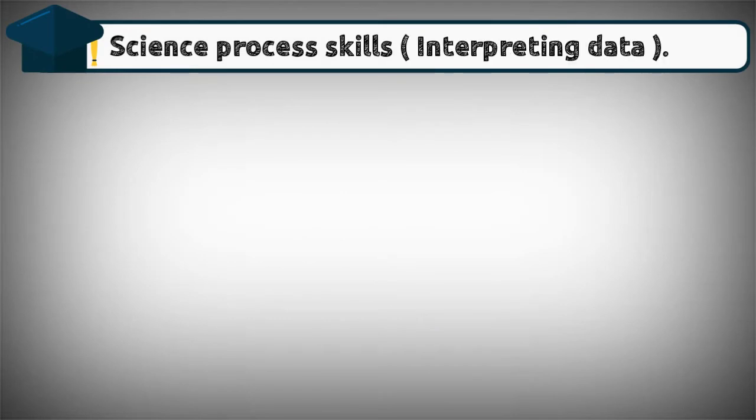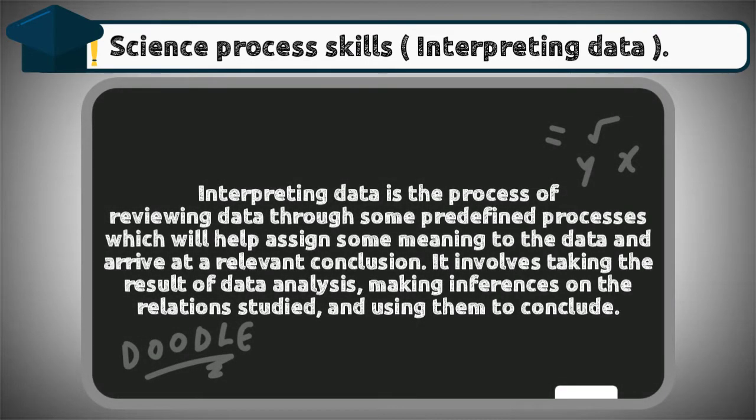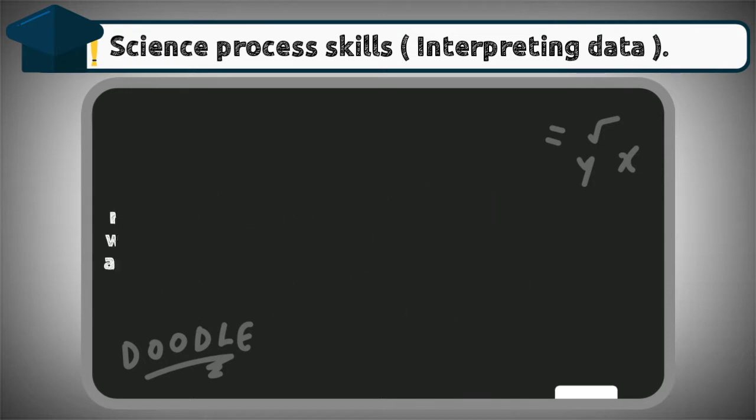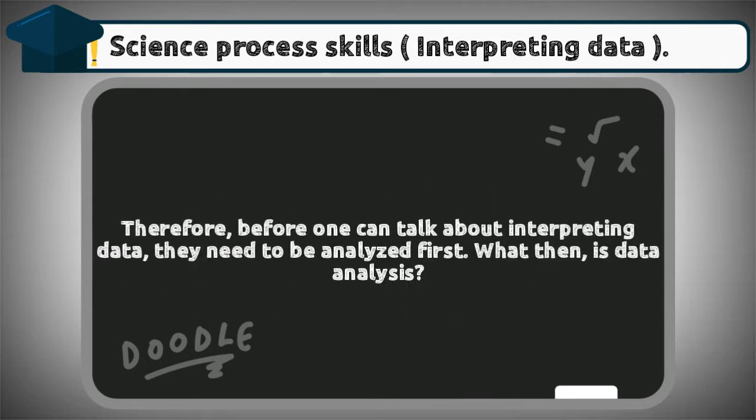Science process skills: interpreting data. What is interpreting data? Interpreting data is the process of reviewing data through some predefined processes which will help assign some meaning to the data and arrive at a relevant conclusion. It involves taking the result of data analysis, making inferences on the relations studied, and using them to conclude.